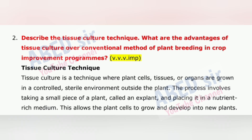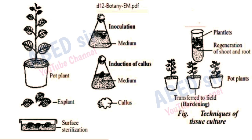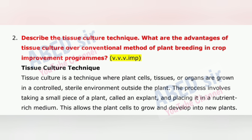Next important question is 2: Describe the Tissue Culture Technique. What are the advantages of tissue culture over conventional methods of plant breeding in crop improvement programs? Tissue culture is a technique where plant cells, tissues, or organs are grown in a controlled, sterile environment outside the plant. The process involves taking a small piece of plant, called an explant, and placing it in a nutrient-rich medium. This allows the plant cells to grow and develop into new plants.